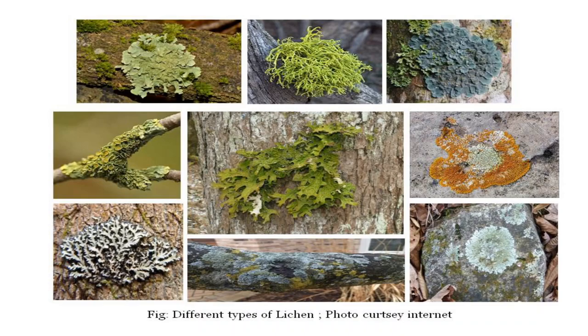Foliose lichens are leaf-like lichens. Their thallus is flat and horizontally spreading with lobes, and some parts of the thallus are attached to the substratum.